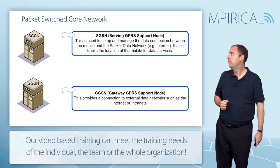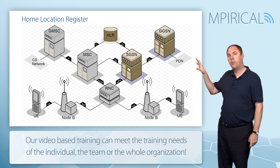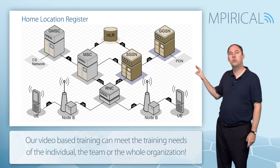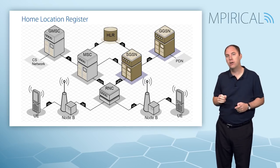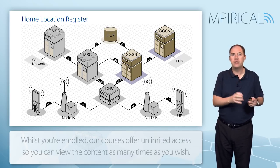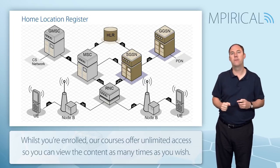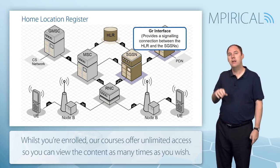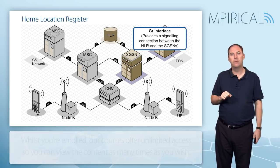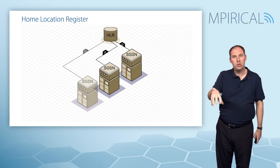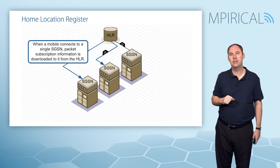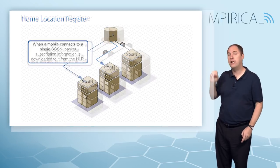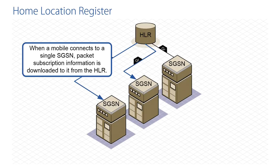You are anchored on the GGSN but can move to different SGSNs as part of mobility. We also have connectivity towards the HLR via the Gr interface — 'G' for GPRS, 'r' for register. As you connect onto an SGSN, your profile information is downloaded to that SGSN. Different users on different SGSNs will have their profile downloaded from the HLR to the right SGSN for that subscriber.